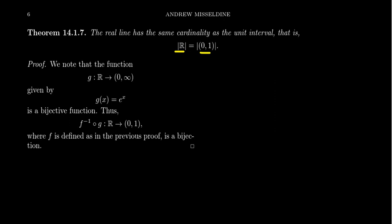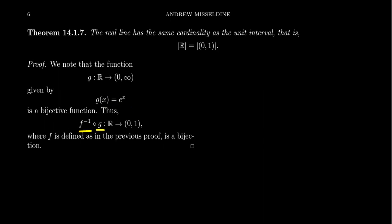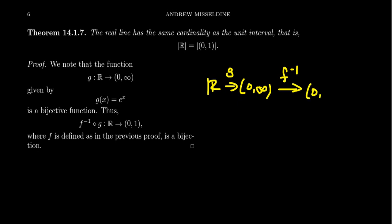Likewise, the real line ℝ has the same cardinality as the unit interval. If the unit interval can give you half the real line, it can give you all of it. Consider the bijection g from ℝ to (0,∞) given by g(x) = eˣ — the natural exponential. Its inverse is the natural logarithm. By composing g with f⁻¹ from our previous result — g maps ℝ to (0,∞), then f⁻¹ maps (0,∞) to (0,1) — we get a composition that is also a bijection. So ℝ and (0,1) have the same cardinality.